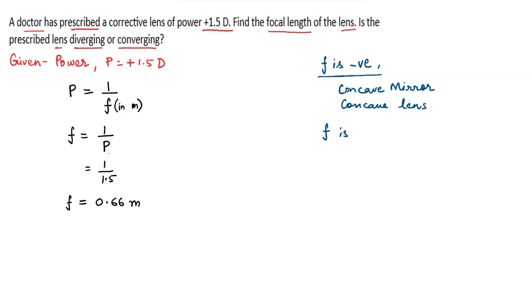Focal length is positive for convex mirror and for convex lens. So we can see in our question focal length is positive, so focal length is positive for convex lens only.